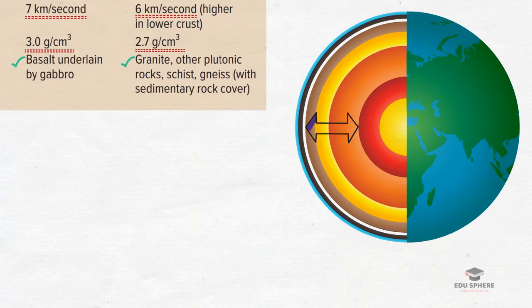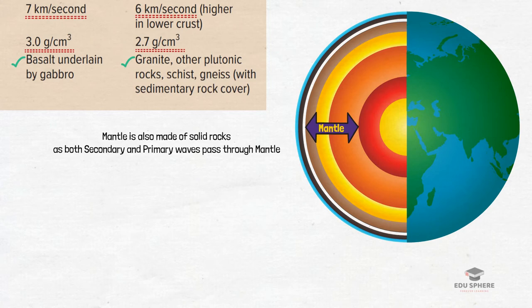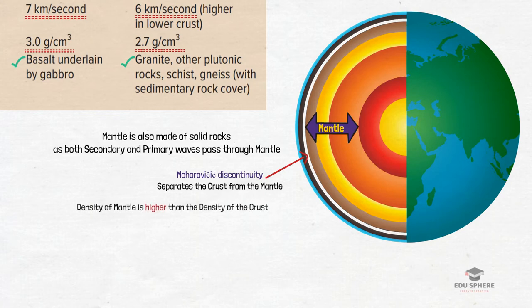The next layer is the mantle which lies between the upper crust and the lower core. Since both the secondary and primary waves pass through the mantle, geologists think that the mantle is also made of solid rocks just like the crust. The boundary that separates the crust from the mantle beneath is called the Mohorovicic discontinuity. So, we can say that the Mohorovicic discontinuity marks the lower limit of the Earth's crust and beginning of the mantle. Since the velocity of the seismic waves in the mantle region is little higher, the scientists have concluded that this region must be relatively denser than the crust and also the composition of rocks would be quite different.